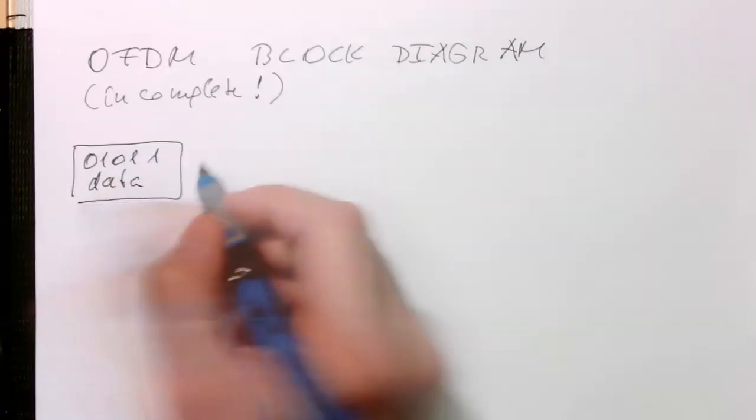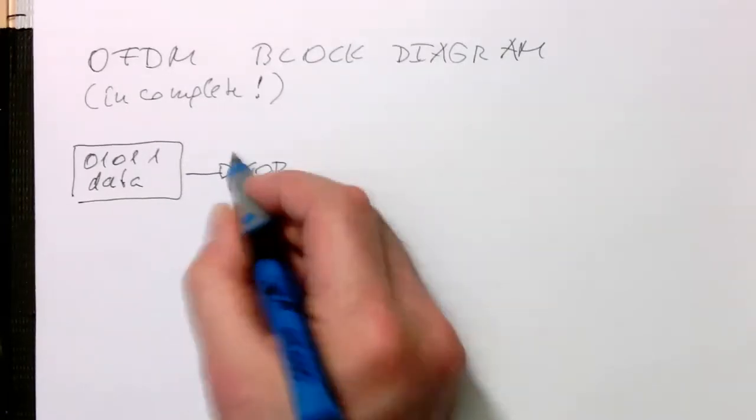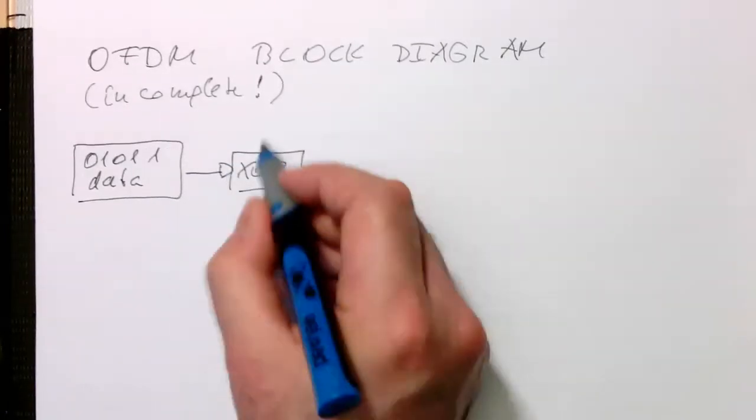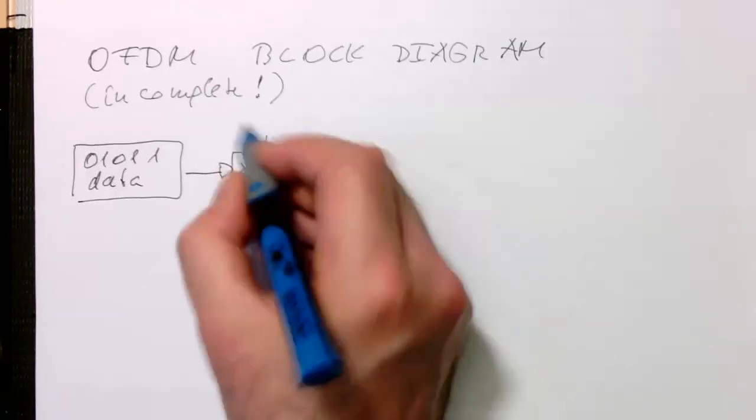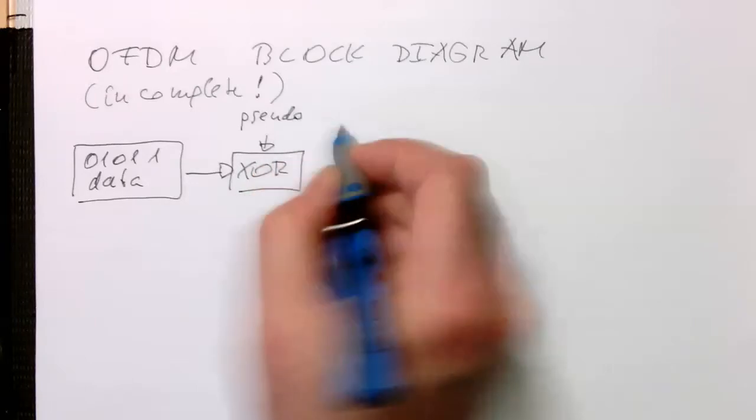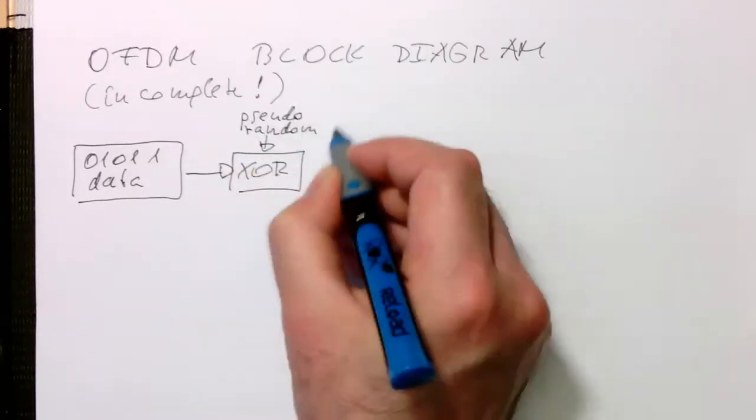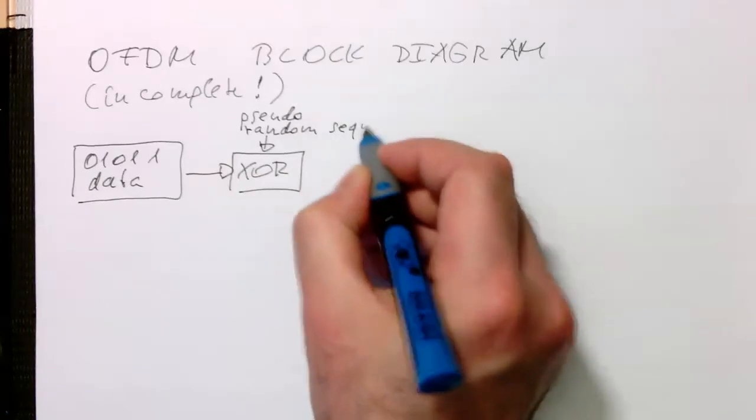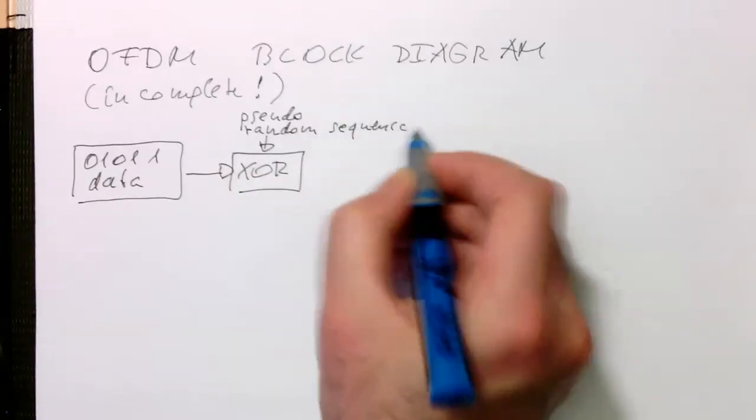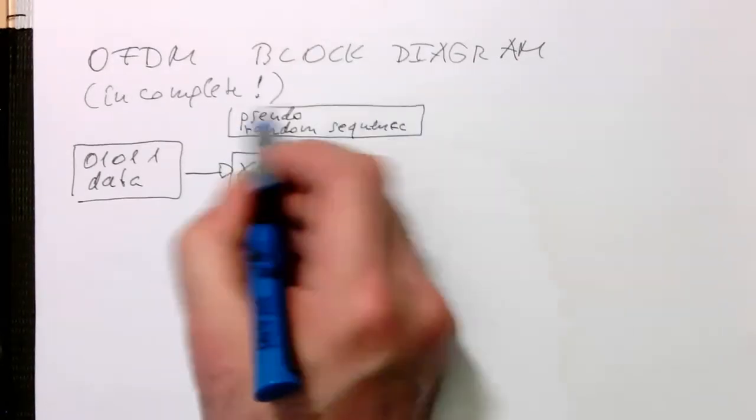What we do is send this through an XOR gate and use a pseudo-random sequence. So that's a pseudo-random sequence here.